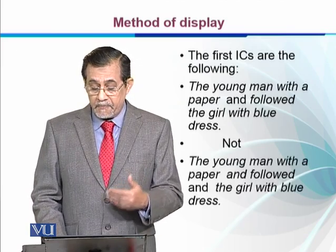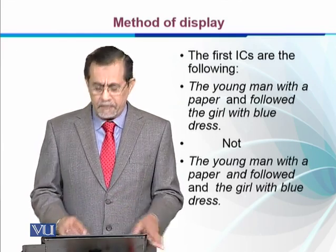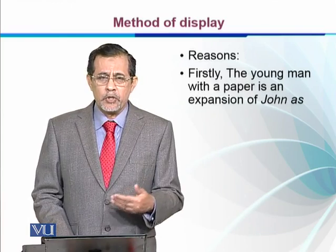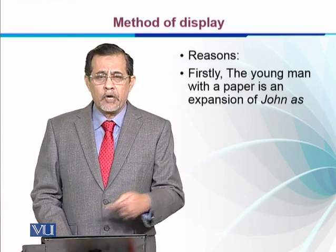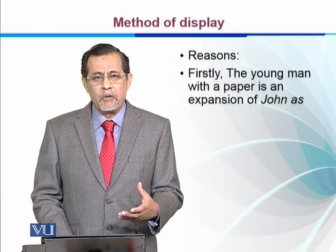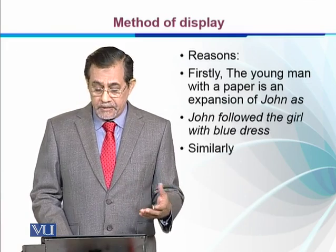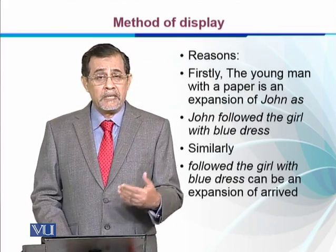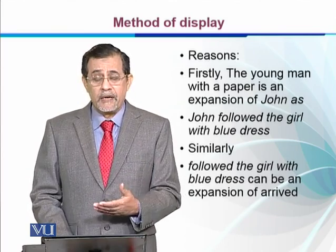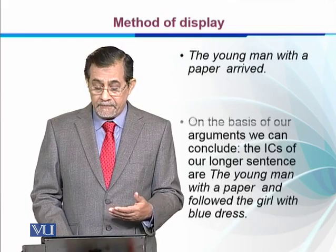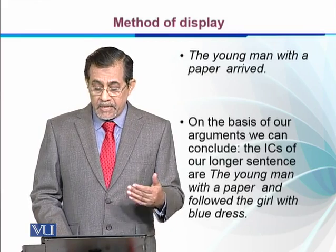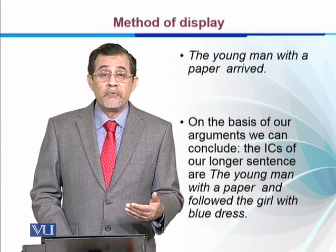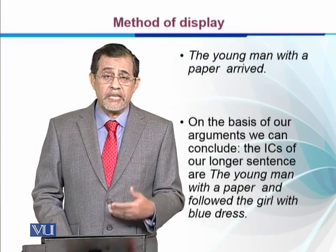Not 'the young man with a paper and followed' — that is not possible. Firstly, 'the young man with a paper' is an expansion of 'John,' so we can say 'John followed.' If we had included 'John' with the first cut, that would not be possible — 'John followed the girl with blue dress.' Similarly, 'followed the girl with blue dress' can be an expansion of 'arrived,' so we can say 'John arrived' or 'the young man with a paper arrived.' On the basis of these arguments, we conclude the ICs of the longer sentence are 'the young man with a paper' and 'followed the girl with blue dress,' because we have applied the notion of expansion to the elements.